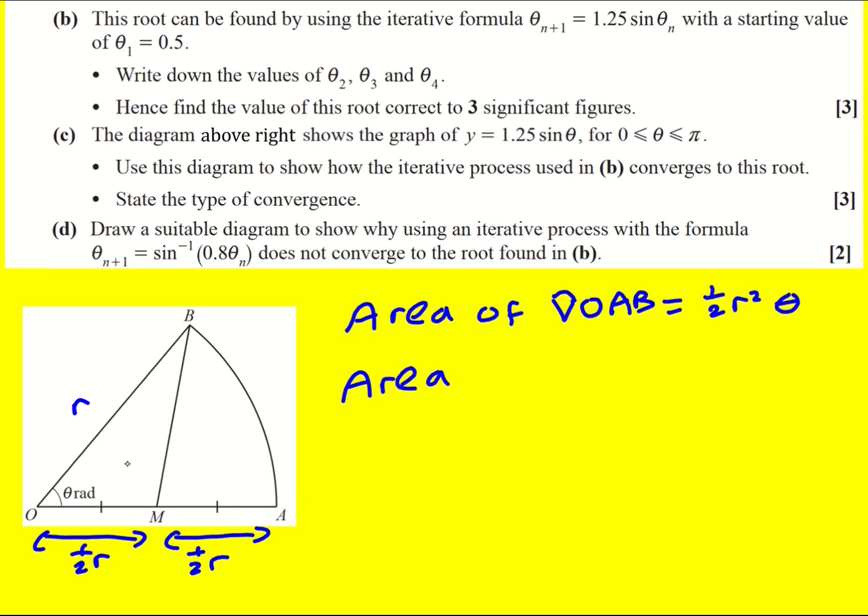We're going to need that because I'm then going to subtract the triangle area to get the MAB area. So the triangle OMB is going to be a half AB sine C, so in this case a half R times a half R times sine theta.